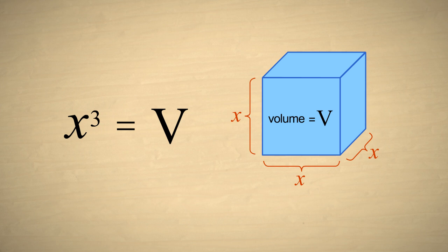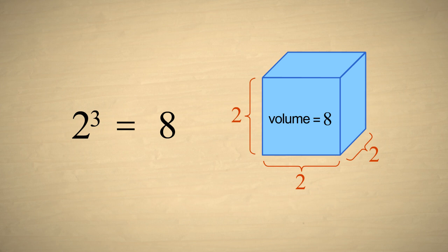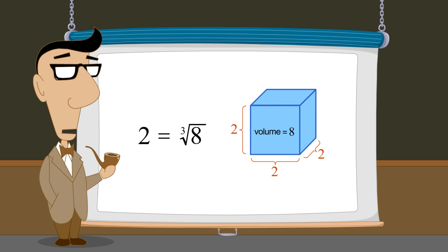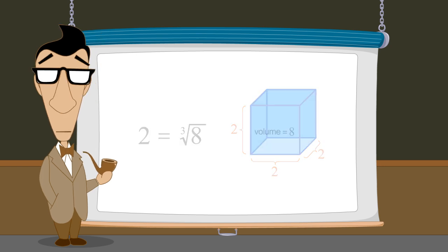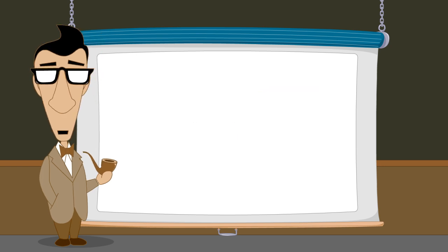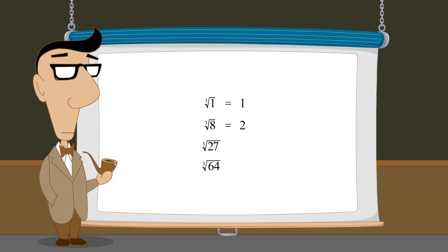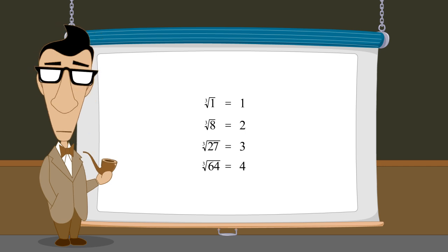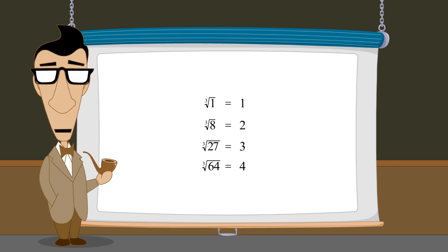For example, if we want a volume of 8 cubic meters, then a side length of 2 meters will work, since 2 cubed is 8. Therefore, we say that 2 is the cube root of 8. Cube roots, like square roots, can sometimes be integers. For example, the cube roots of 1, 8, 27, and 64 are 1, 2, 3, and 4, respectively. However, just like with square roots, the cube roots of most numbers are irrational.